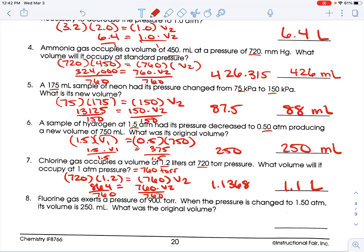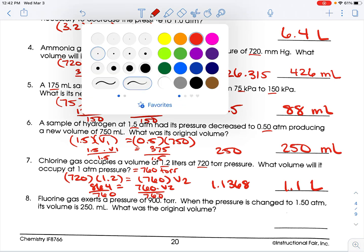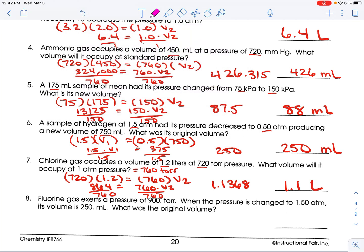Fluorine gas exerts a pressure of 900 torr. When the pressure is changed to 1.5 atmospheres, its volume is 250 milliliters. We're looking for original volume. But, we need to adjust our pressures. So, it doesn't matter if you want torrs or atmosphere. I'll change to atmosphere. So, I have 900 torr, and I know that 760 torr is one atmosphere, because they're both standards. So, 900 divided by 760 is 1.184 atmospheres. And we'll round it away with sig figs later. So, we start with the 1.184 because that's atmospheres, and I don't know this. And I have 1.50, and it's 250.